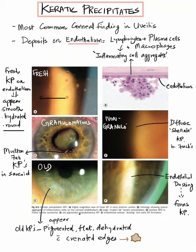It is important to know the difference between a fresh keratic precipitate and an old keratic precipitate. A fresh KP will appear smooth, hydrated, and round, whereas an old KP will appear pigmented, flat, and dehydrated with crenated edges.